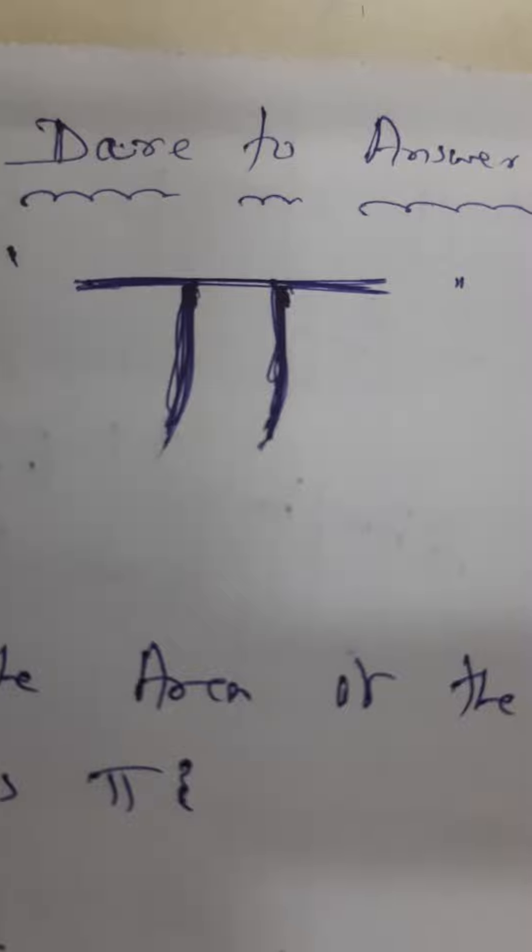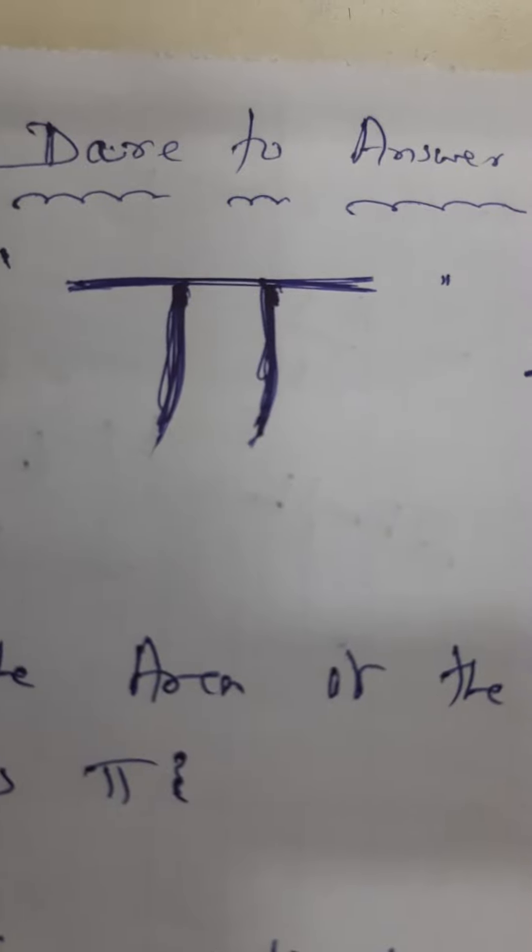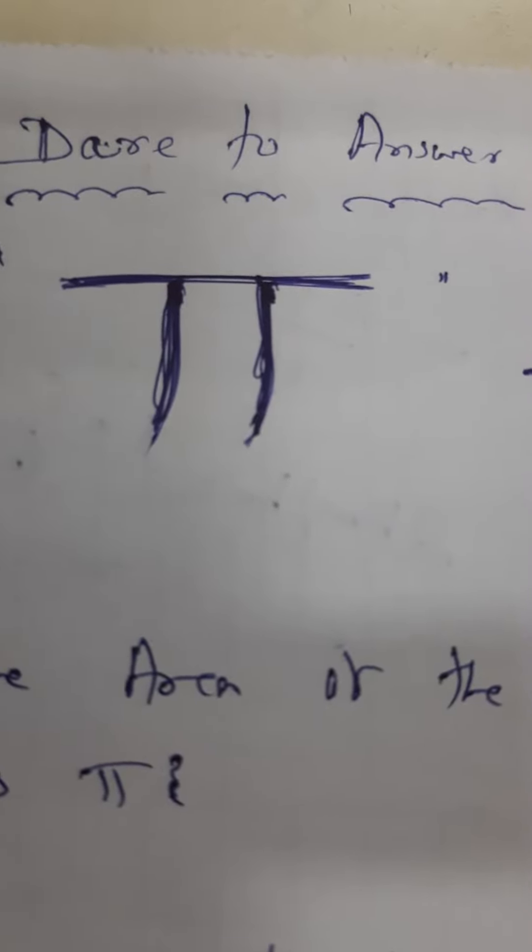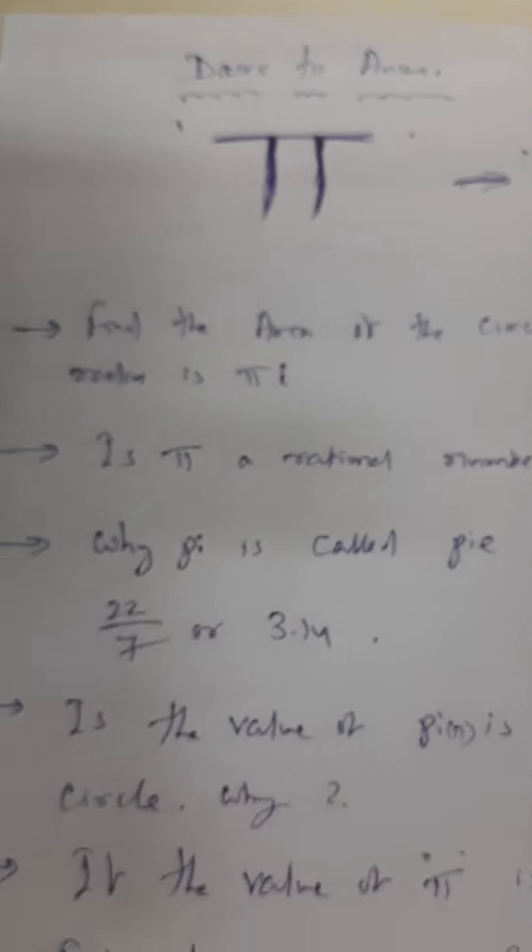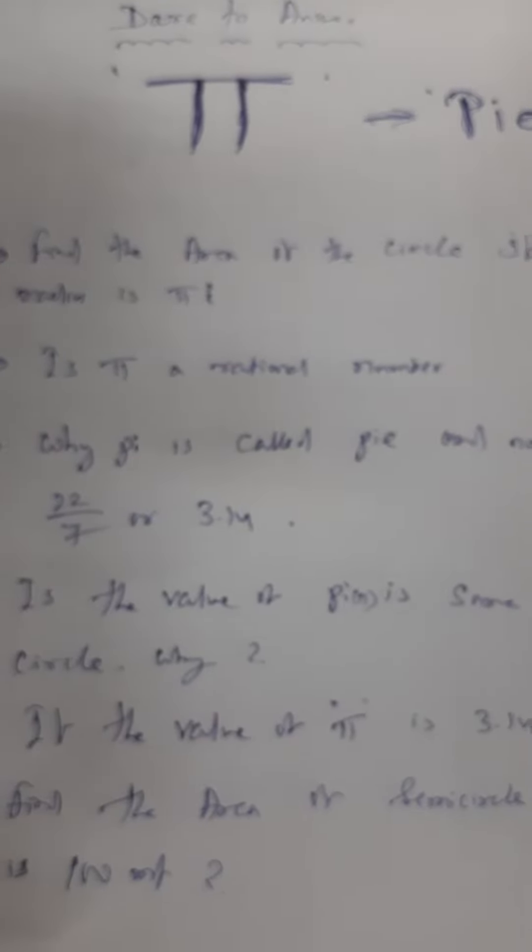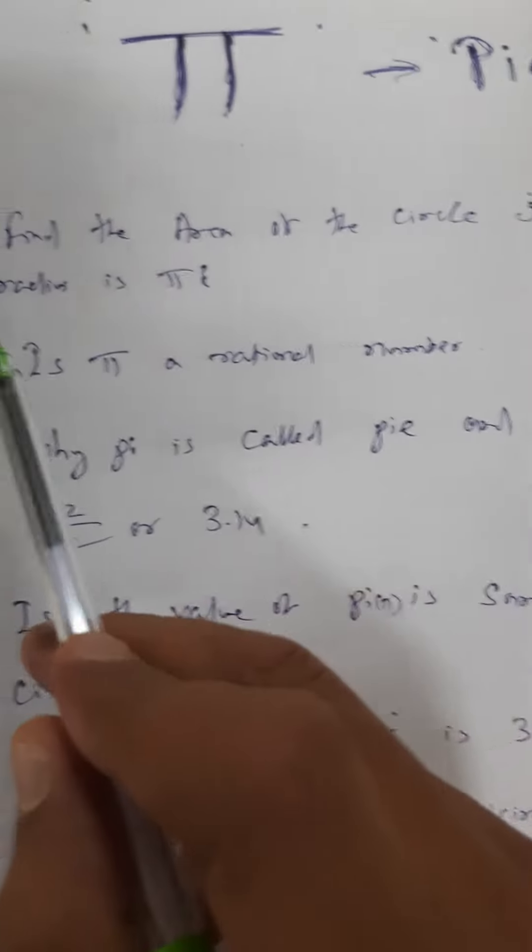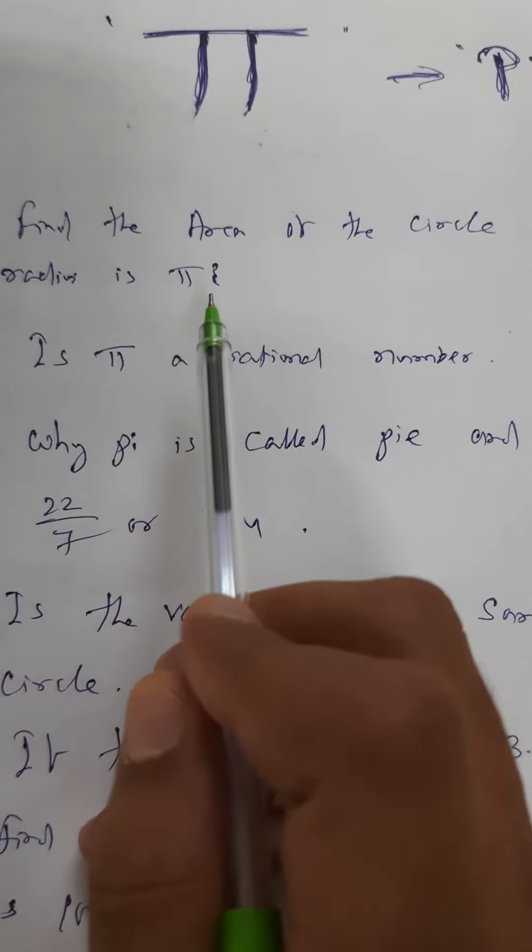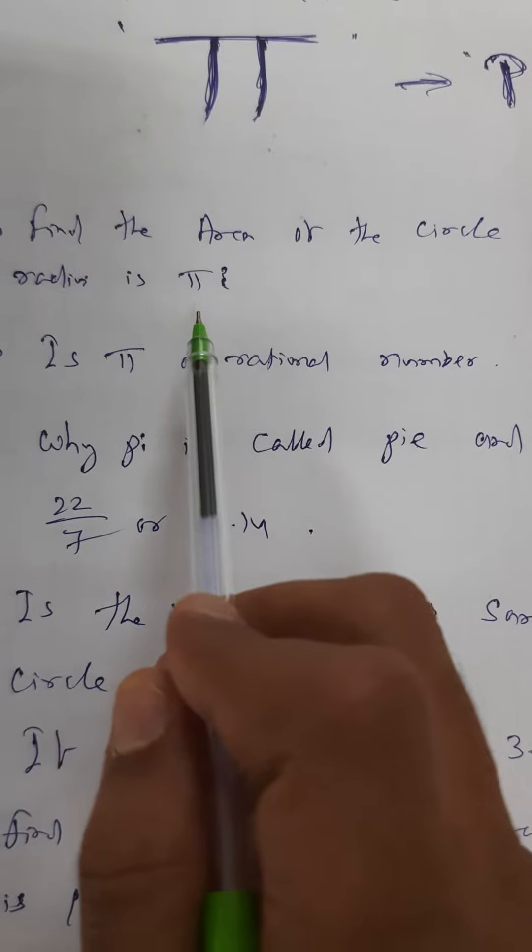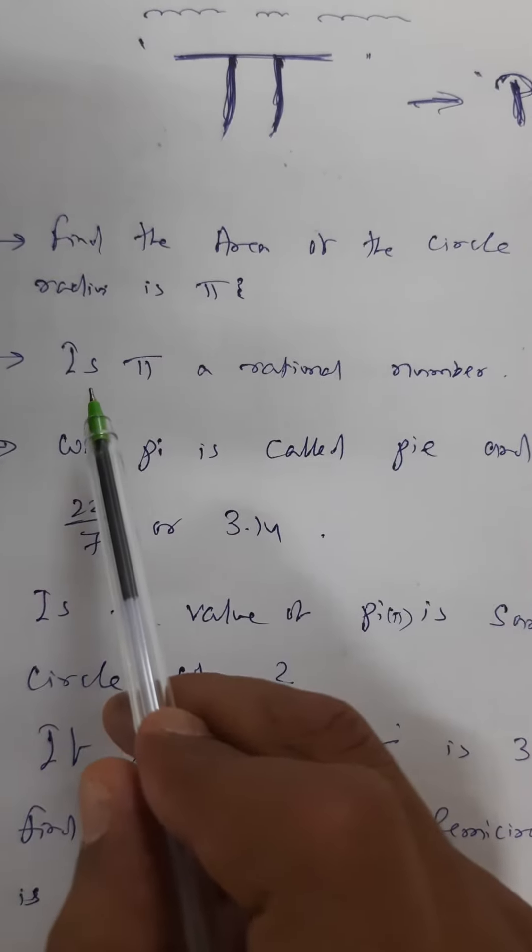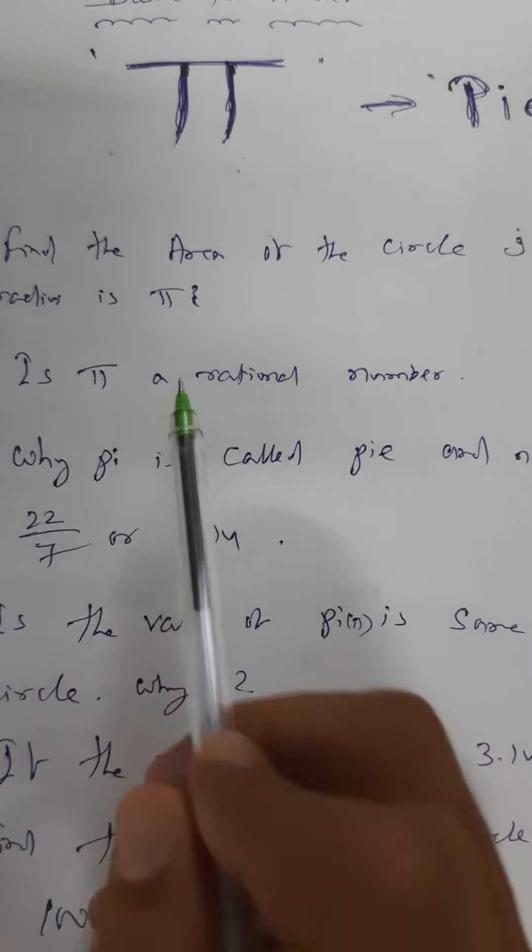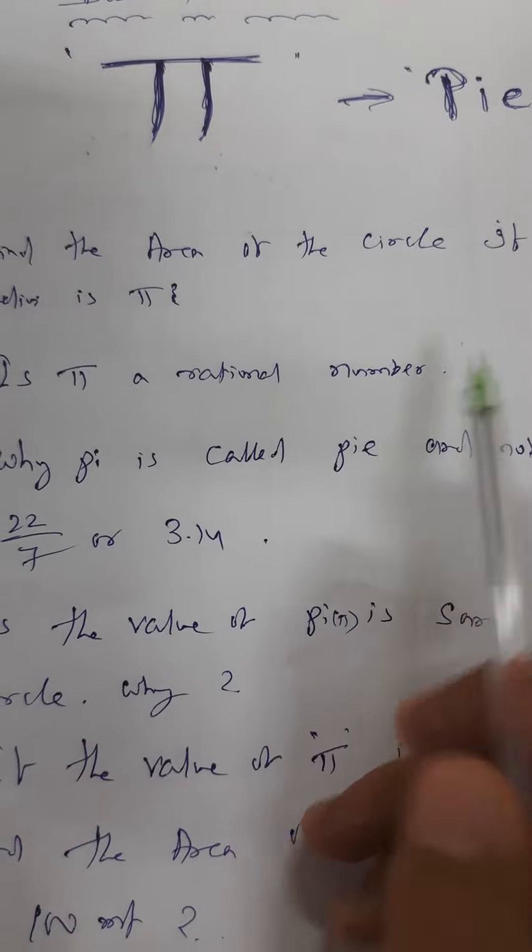So regarding this pi, I have a certain question for you, my dear friends. Are you ready for this challenge? Okay, be ready. The first question I have: find the area of the circle if its radius is pi. The second one is: is pi a rational number?